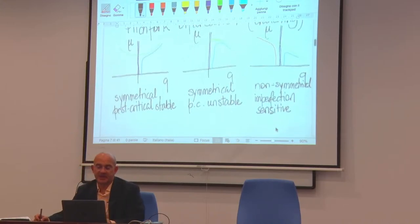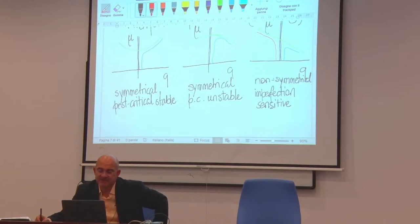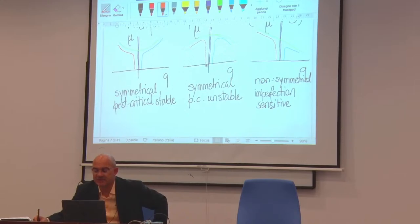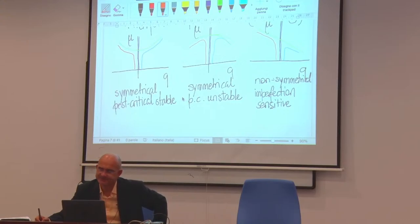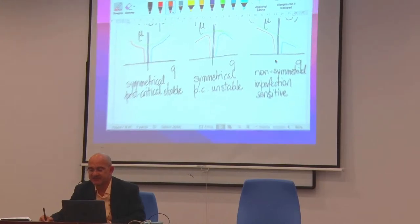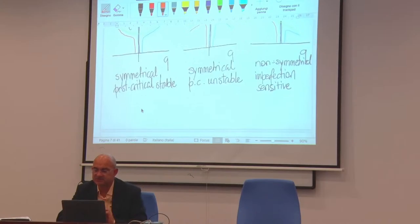What is important is that this is generally imperfection sensitive. In symmetric structures, starting from a positive or negative imperfection, we see the same behavior — there is no qualitative change. So in this sense, the symmetric phenomena are imperfection insensitive. While in the unsymmetrical case, the quality or even the sign of the imperfection may dramatically affect the quality of bifurcation.